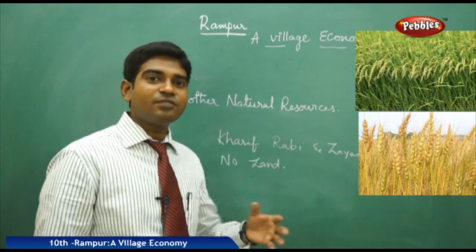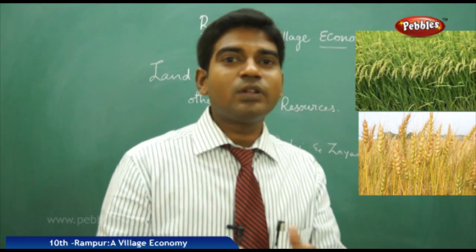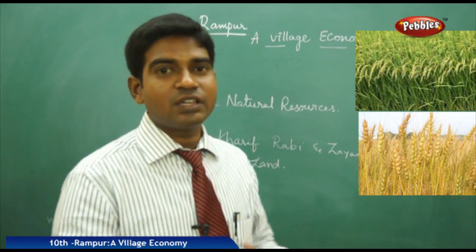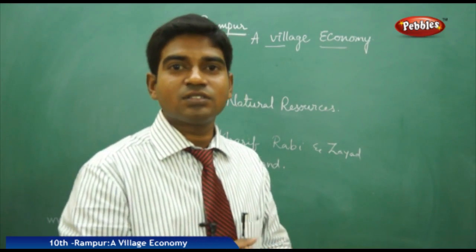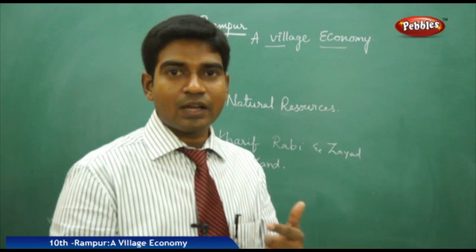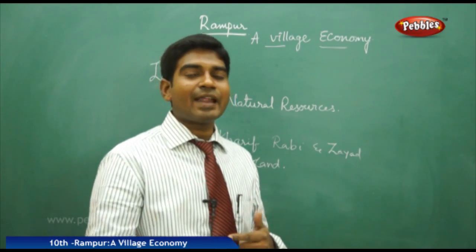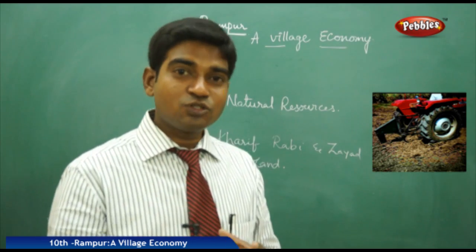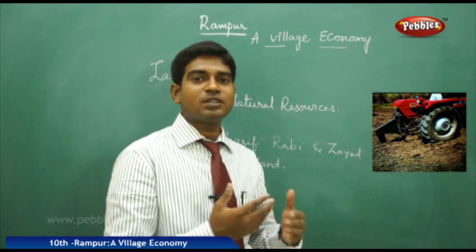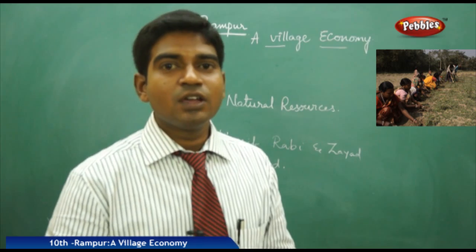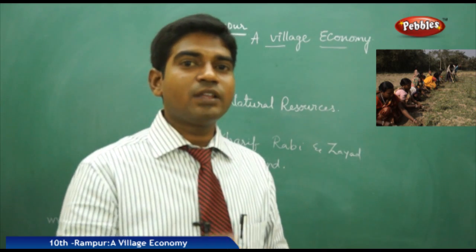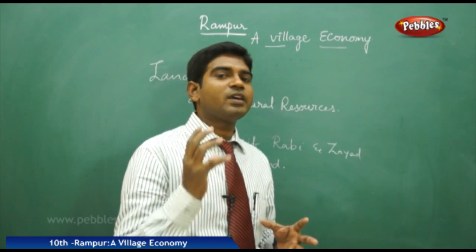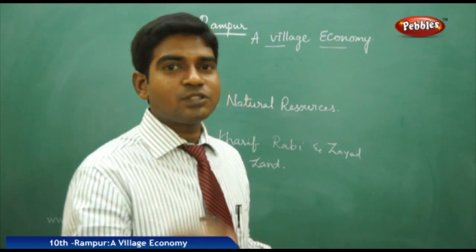They do not waste any droplet of water, using drip irrigation facilities. They are now able to cultivate crops in all three seasons — Kharif, Rabi, and Zaid. Modern agriculture uses electricity, fertilizers, and quality seeds. Instead of bullock carts and buffaloes, they use tractors and machinery. People without land work on big landlords' farms for a sustainable income. Windmills are also used to sustain fuel needs. Rampur is an ideal village where all facilities required for agriculture are available.